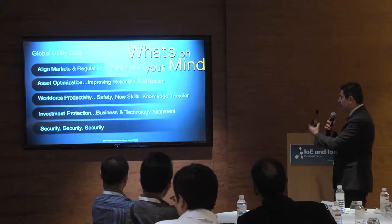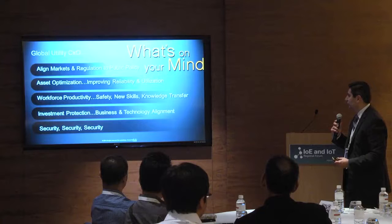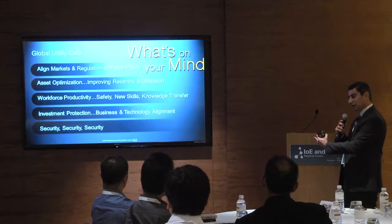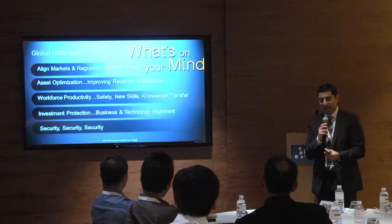Asset optimization is clearly one of your top priorities. Workforce productivity, safety, new skills, and knowledge transfer are also important — Anil touched on workforce aging and how to bring new talent and new skills into the workplace. Investment protection — from what you already have to what you want to transition to — is another consideration. And the bottom line that we feel is paramount in any IoT environment is security. Unless you can do it securely, how do we collectively make sure what we have is secure, manageable, and trackable?